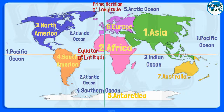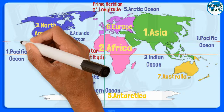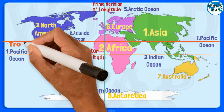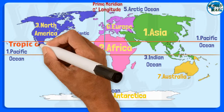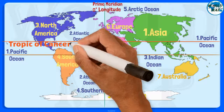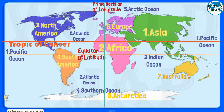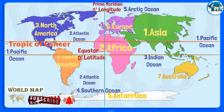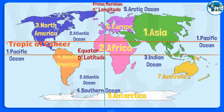Tropic of Cancer. The Tropic of Cancer, also known as the northern tropic, is the most northerly circle of latitude on Earth at which the Sun can be directly overhead. This occurs on the June solstice, when the northern hemisphere is tilted toward the Sun to its maximum extent.